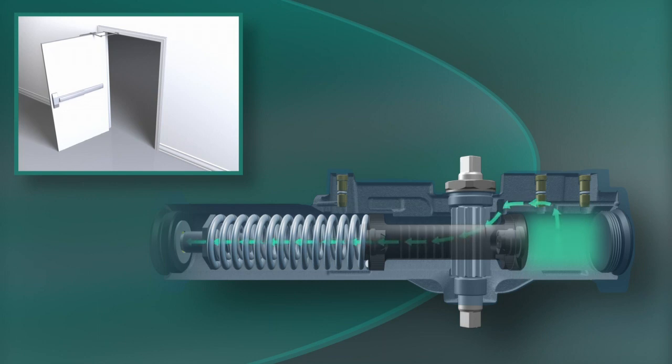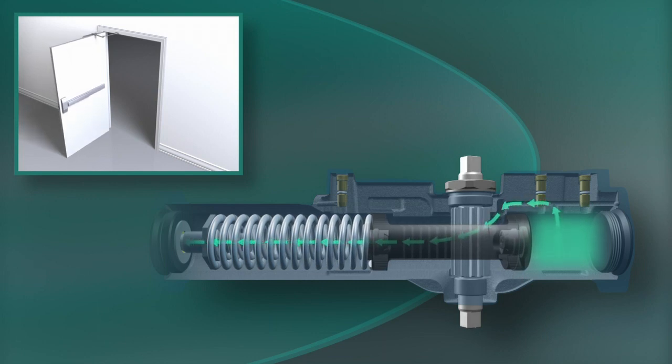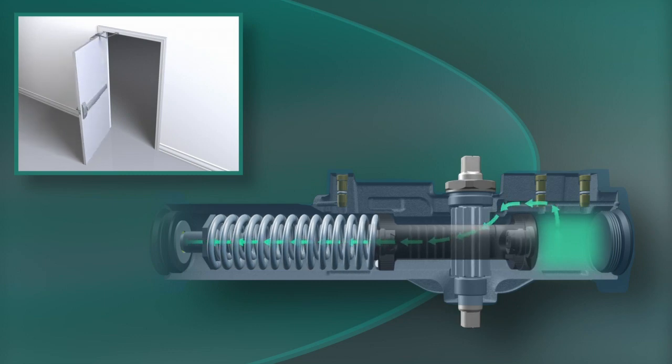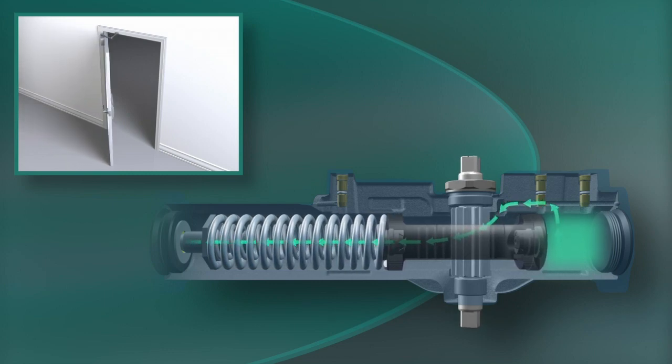When the door is released, the stored energy in the spring pushes the piston back. The fluid is now routed through valves that control the closing speed of the door.